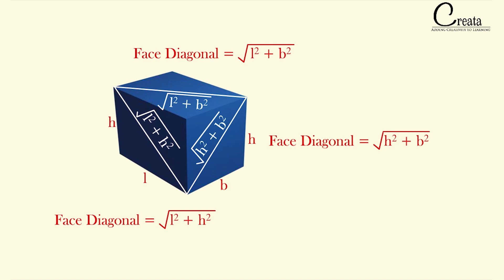What we have done is identify each face of the cuboid and apply the Pythagorean theorem to it. In different books you will find different formulas for the face diagonal, but there is no need to memorize them. Just remember the concept: apply Pythagoras to find the face diagonal using the basic fundamentals of the Pythagorean theorem.